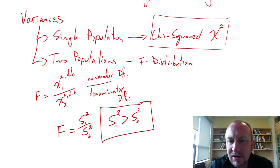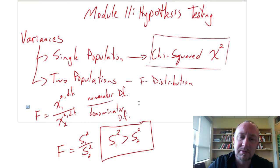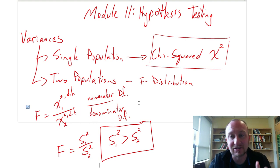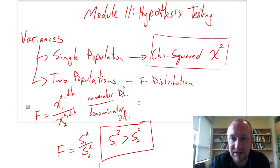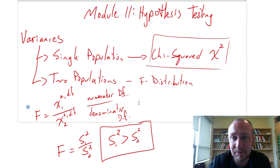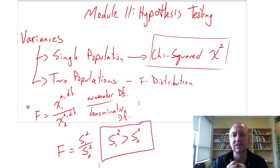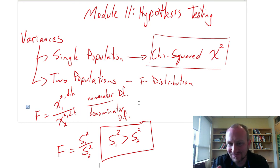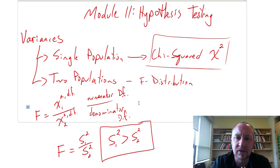That's the introduction for this module. We'll be doing more hypothesis testing, and a lot of knowledge from Module 9 carries through — the formulation of tests, rejection rules using p-value and critical value approaches will be either identical or very similar. So if you've watched those videos, much of it will sound familiar. Let's get into some problems.